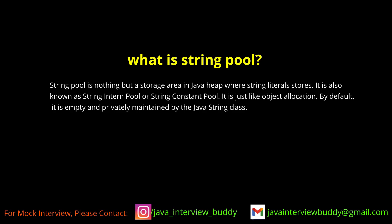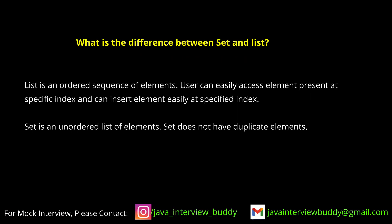What is a string pool? Once you create an object in String, it will create one object in the string pool. Suppose you created an object — String s1 = new String("abc") — then it will create two objects: one in the constant pool and another in the heap area.